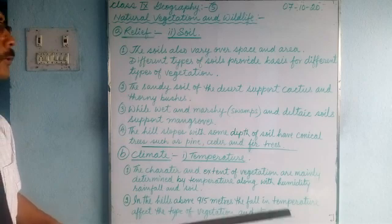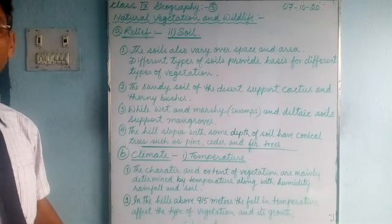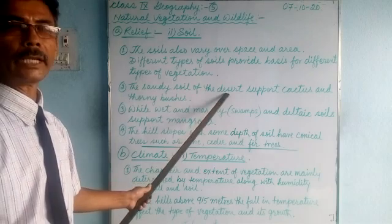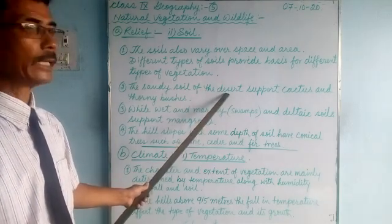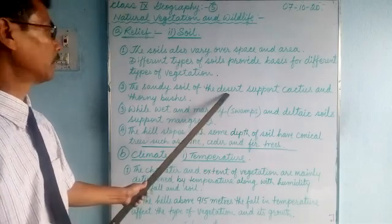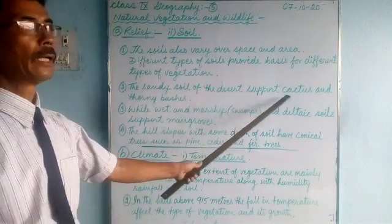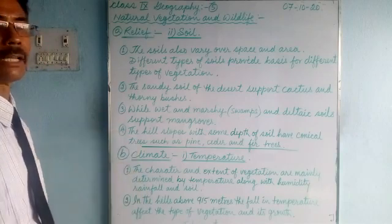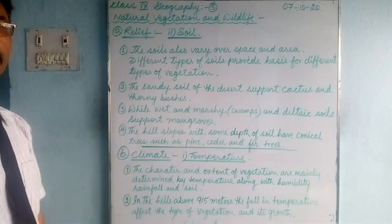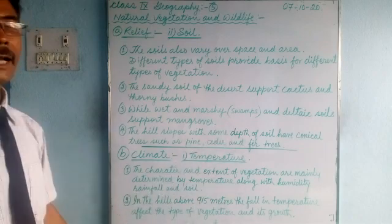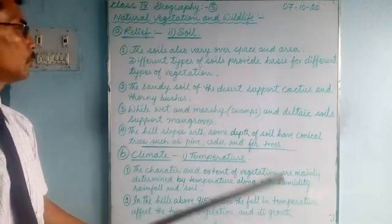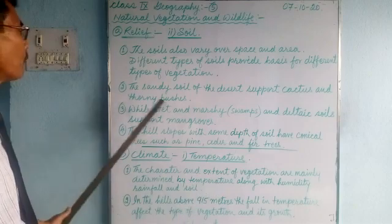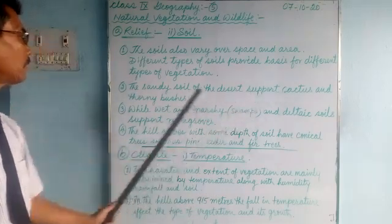Certain soils are suitable for certain kinds of plants, and certain soils are not. The characteristics of a plant — its height, its fruits — everything depends on the soil. For example, the sandy soil of the desert, in arid areas where there is very little water, supports cactus and thorny bushes. These plants have very long roots that go deep inside the soil in search of water, allowing them to survive where other plants cannot.